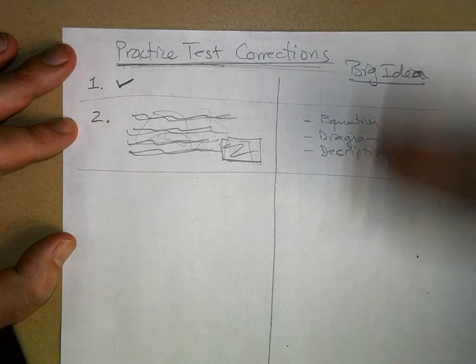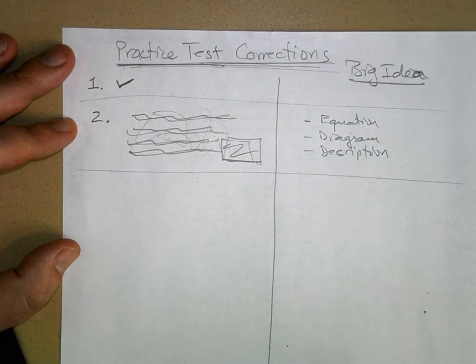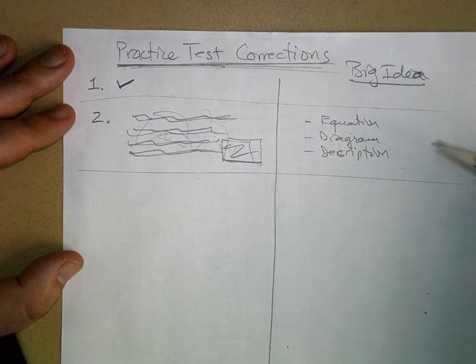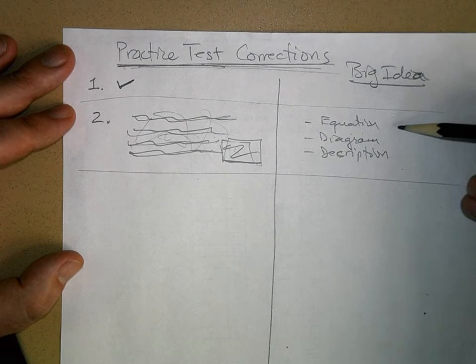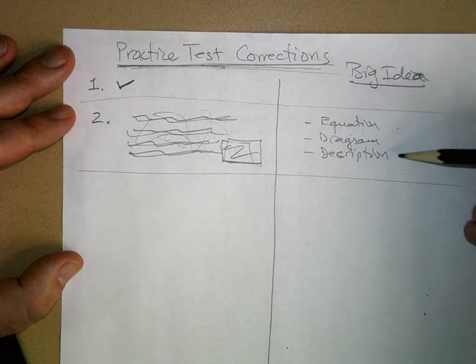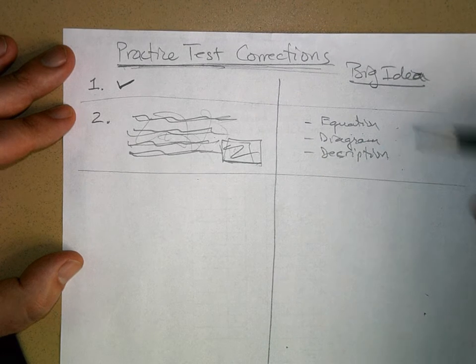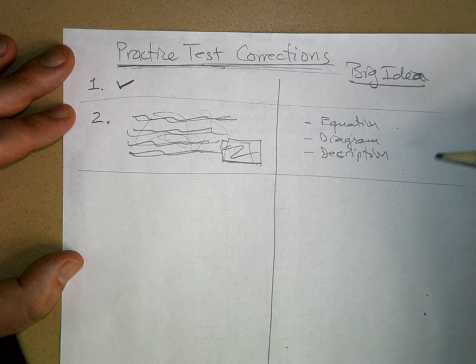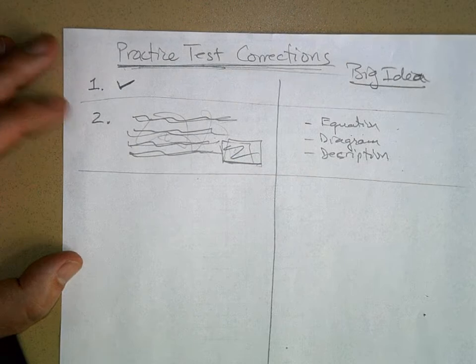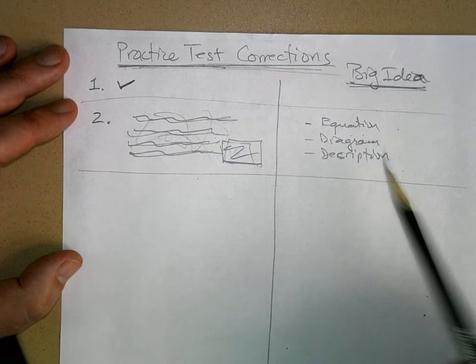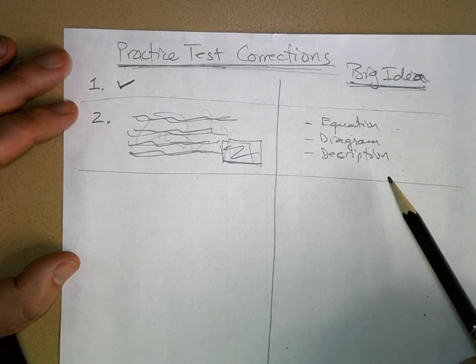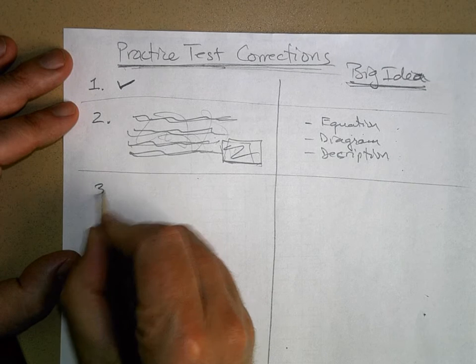And then on the other side, on the right-hand side of your paper—and you should do this in portrait—list any equations or important diagrams or descriptions of what you need to know to do a problem similar to this one. It's kind of like what is the big idea for this problem. Now over the weekend you should be doing this.